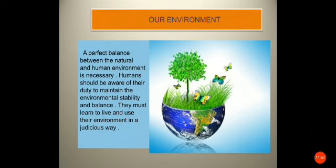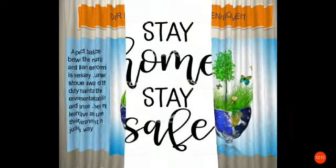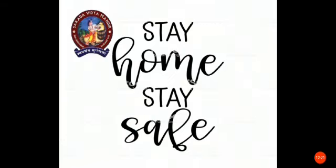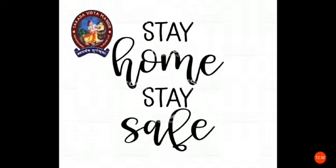Lastly, what should we do to protect our environment? A perfect balance between the natural and human environment is necessary. Humans should be aware of their duty to maintain environmental stability and balance, and must learn to live and use their environment in a judicious way. We have completed this chapter covering the ecosystem, World Environment Day on 5th June, man-made human environment, and the relationship between human beings and the environment.